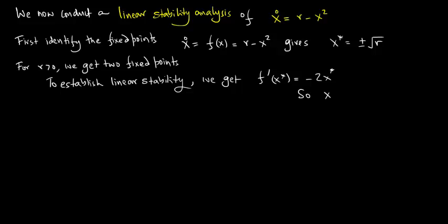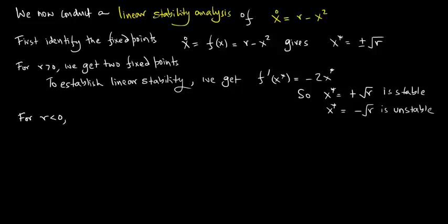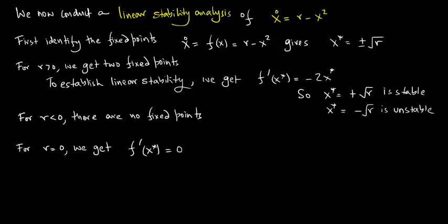For x* = +√r, f′(x*) is negative so it is stable; for x* = −√r, f′(x*) is positive so it is unstable. For r less than 0 there are no fixed points. For r equal to 0, f′(x*) = 0, so the linearized term vanishes.